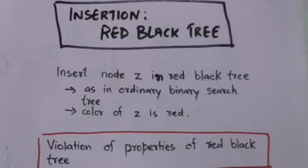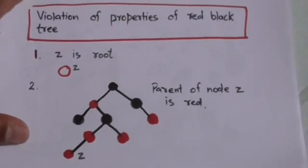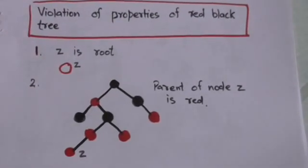Hello friends, welcome back. In this tutorial we will study about insertion in a red-black tree. Suppose we have to insert a node Z in a red-black tree. Node Z will be inserted as if it were an ordinary binary search tree, and the color of this newly inserted node Z will be red.